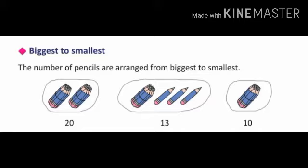Starting from 11: 11, 12, 13, 14, 15, 16, 17, 18, 19, 20 — very good! In the second set there are 13 pencils. It has one bundle of 10 pencils, and we need to add 3 more. So 10 plus 3: count 11, 12, 13. How many pencils in the second set? It is 13.